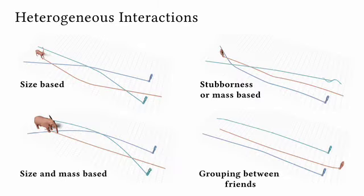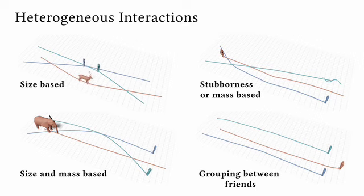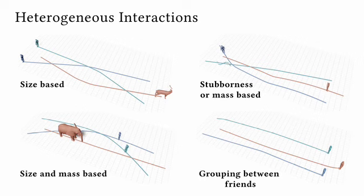Our approach is unique because we can handle asymmetries in scenes that are size-based, stubbornness or mass-based, size and mass-based, and grouping between friends.